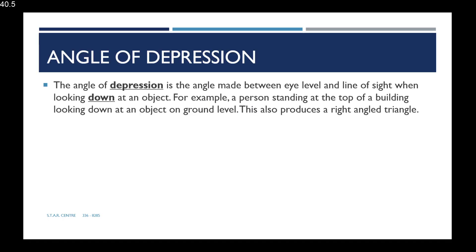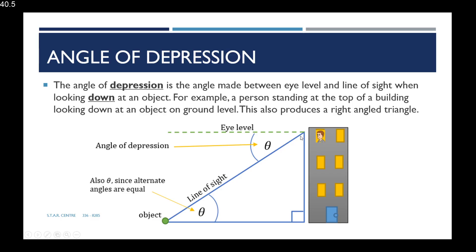The angle of depression is the angle made between the eye level and the line of sight when looking down at an object. For example, a person standing at the top of a building looking down at an object on the ground — the angle made between the eye level and line of sight is the angle of depression. This also produces a right angle triangle. The dotted line represents eye level and the blue line represents the line of sight, so the angle theta created is between eye level and line of sight.